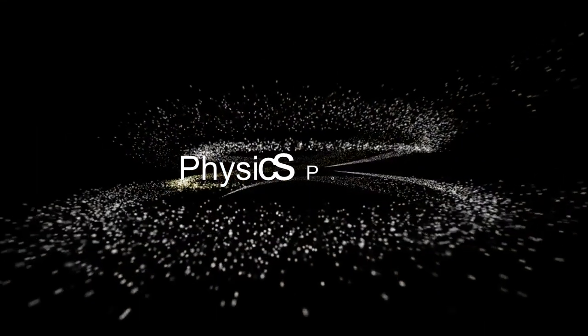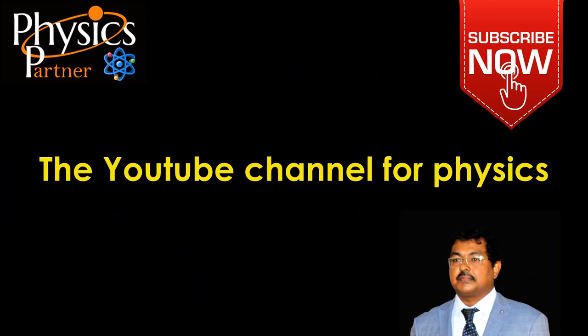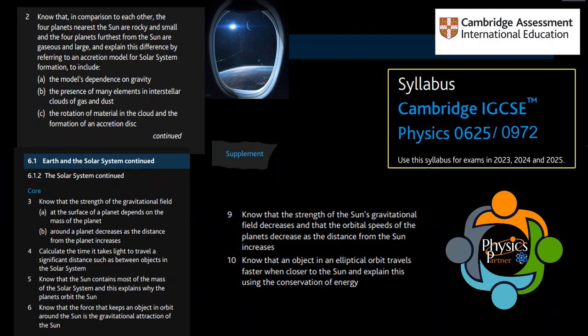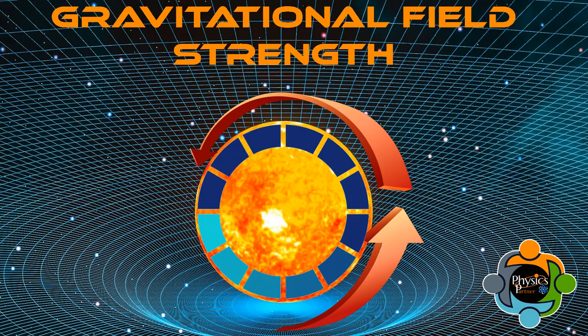Welcome back to another episode of Physics Partner, the YouTube channel for physics. Today's video is the third part of the space series newly added to the IGCSE physics curriculum for codes 0625 and 0972. In today's video we will study about inner and outer planets of the solar system, gravitational field strength, and the factors it depends on.